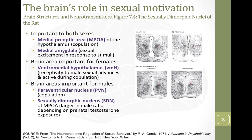Now let's take a look at the brain's role in sexual motivation. We're looking at figure 7.4 right here. It's an area called the sexually dimorphic nucleus of the rat, or the SDN. This is an area of the hypothalamus — we're going to be talking a lot about the hypothalamus in this section — and 'sexually dimorphic' refers to a difference between the two sexes, so two forms.